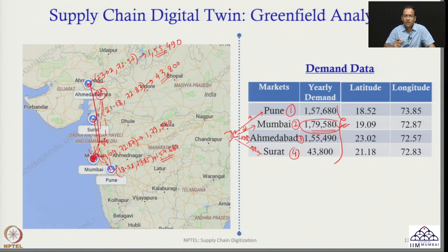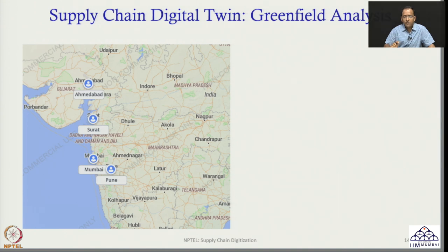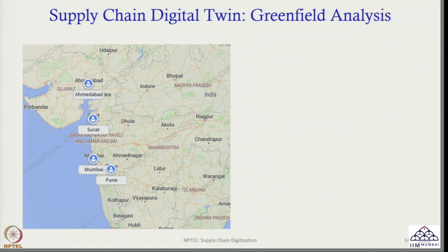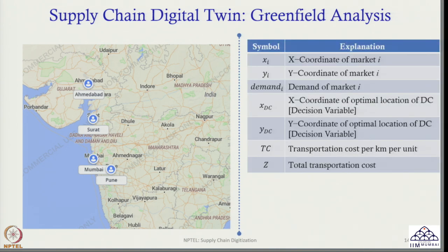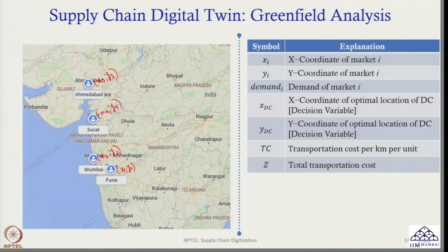To find the exact location of the DC that minimizes overall transportation cost, we need to develop an optimization model. Let us define the symbols: X_i is the x-coordinate (latitude) of market i, y_i is the y-coordinate (longitude) of market i. So market 1 is Pune with coordinates (x1, y1), market 2 is Mumbai (x2, y2), market 3 is Ahmedabad (x3, y3), and market 4 is Surat (x4, y4). I can put latitude and longitude as x and y coordinates to get the exact location of these markets.